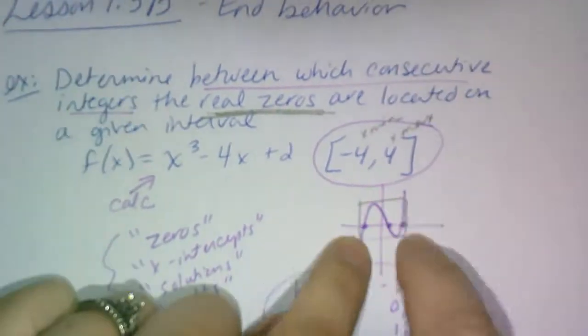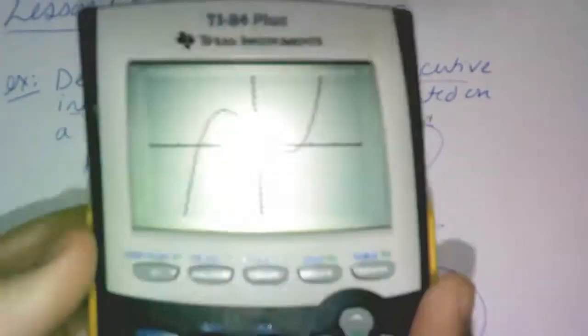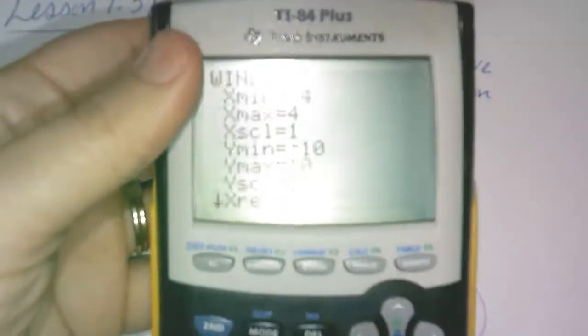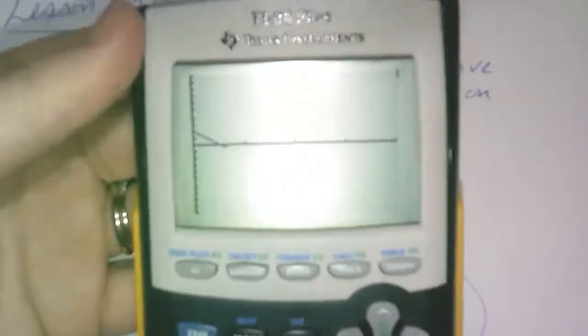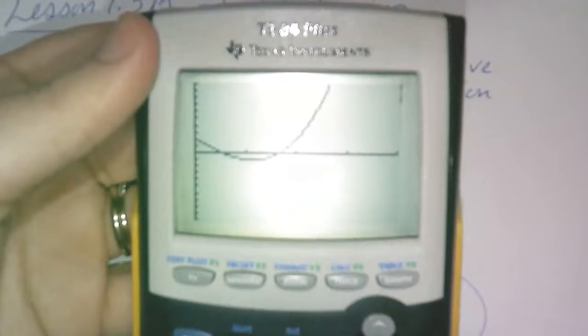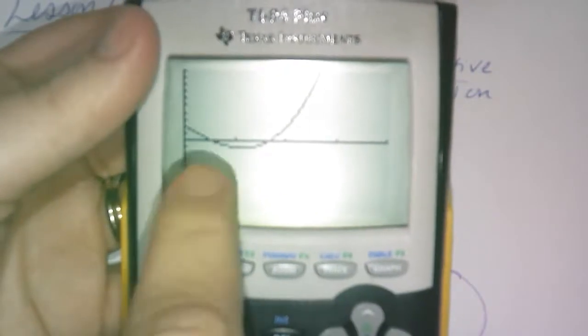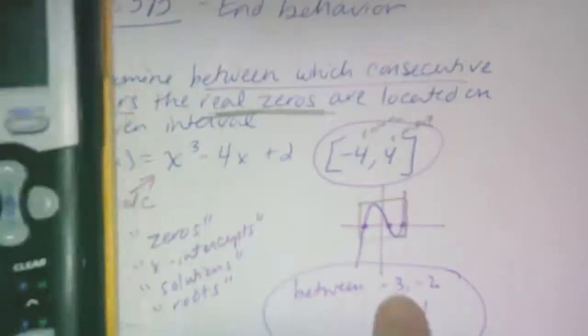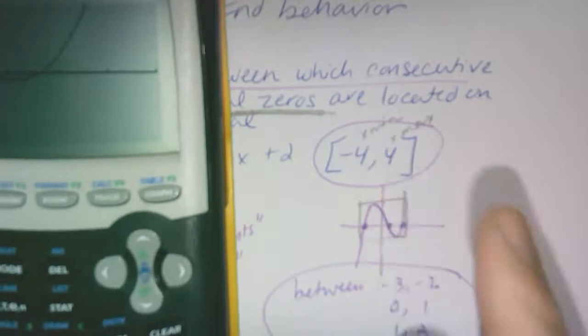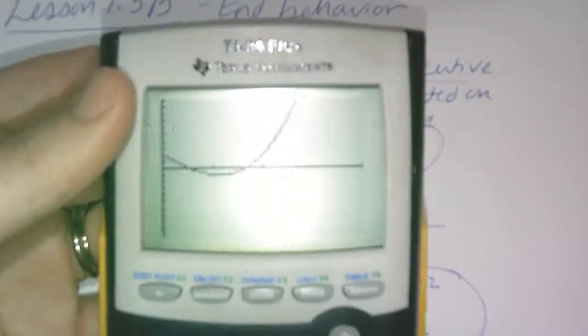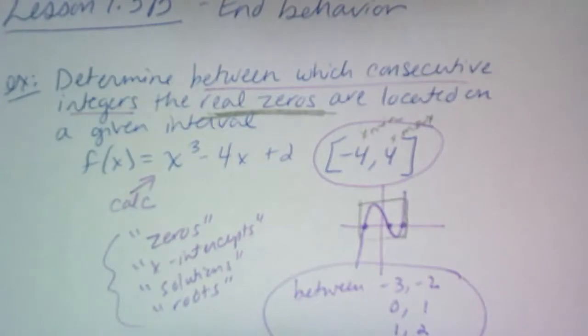They ask you questions like this on SATs all the time, PSATs. They want you to understand that real zeros are where it crosses the x-axis. And then they want you to just tell me the integers. You don't actually have to find the numbers. You can find the numbers. You can do your calculator. We'll find the zeros for you, but we'll do that in a later time.